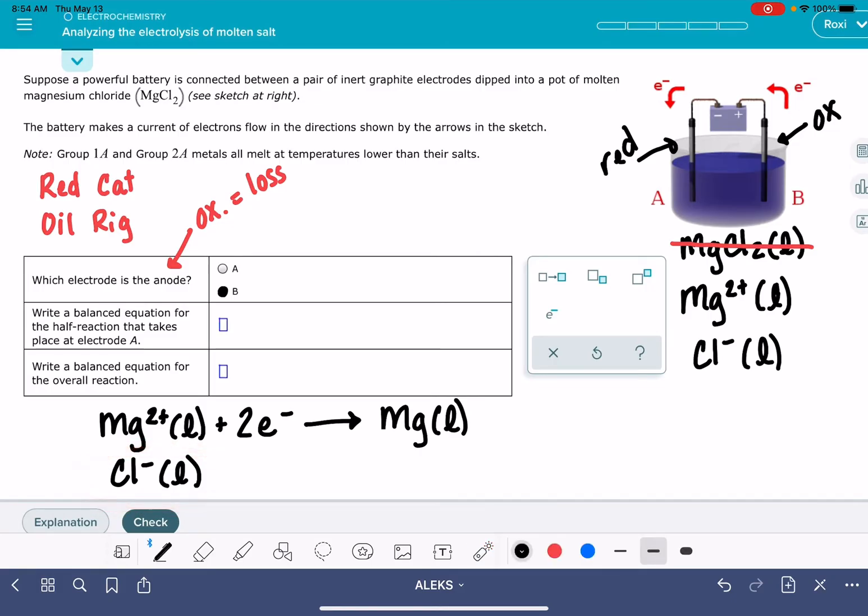So that means that our other component, Cl-, this is going to be our other reaction where we are losing electrons. So again, we want to be taking this back to its natural atomic state. Now, this is where things get a little bit tricky. Chlorine does not exist as Cl. That's not a natural state.